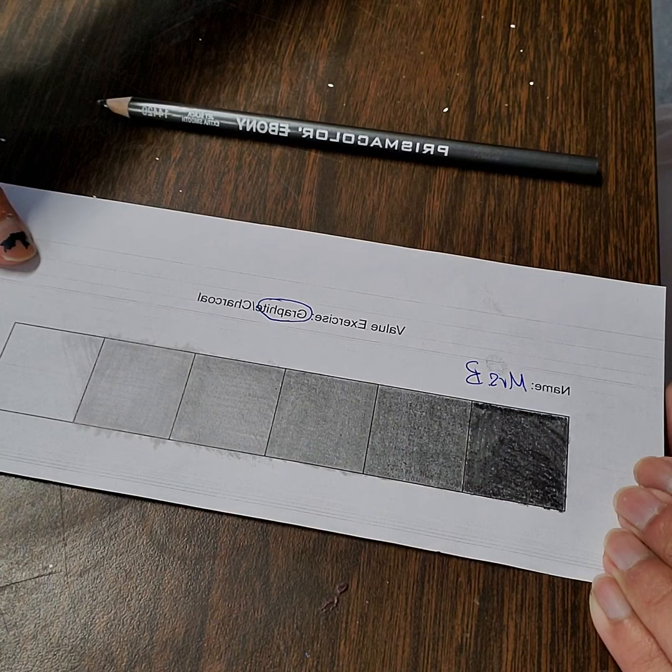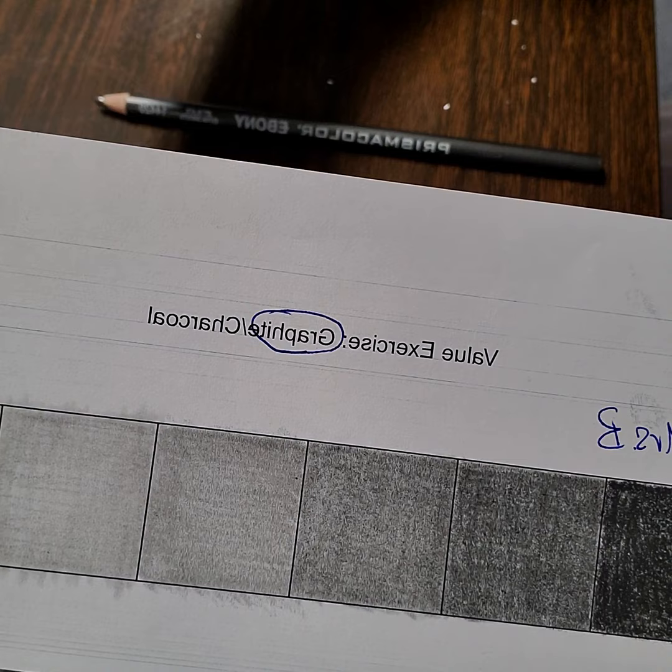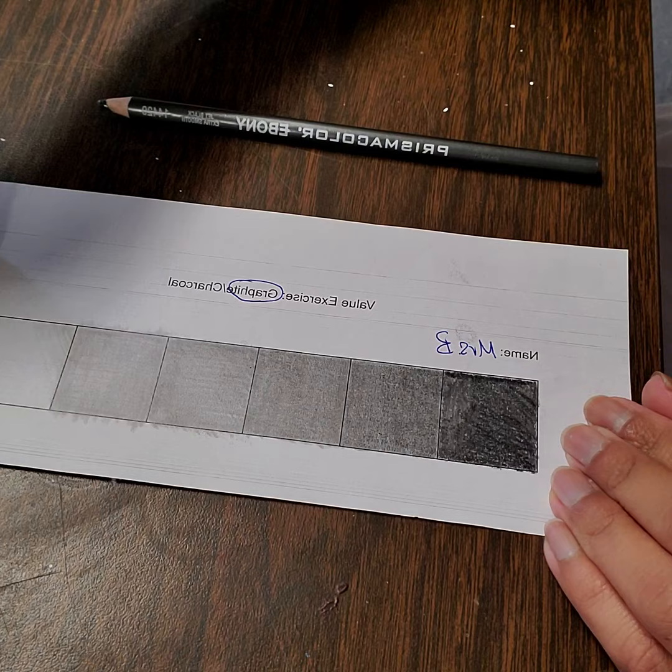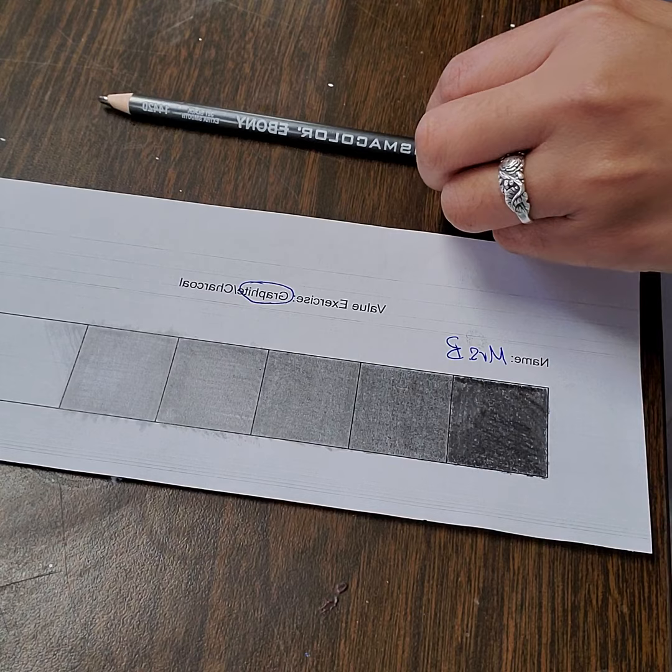As you can see here, I have circled that I am using graphite. Graphite is another fancy word for a pencil. The best type of graphite to use for an art project of this caliber, especially when it comes to portraits or still life, are the ebony pencils.